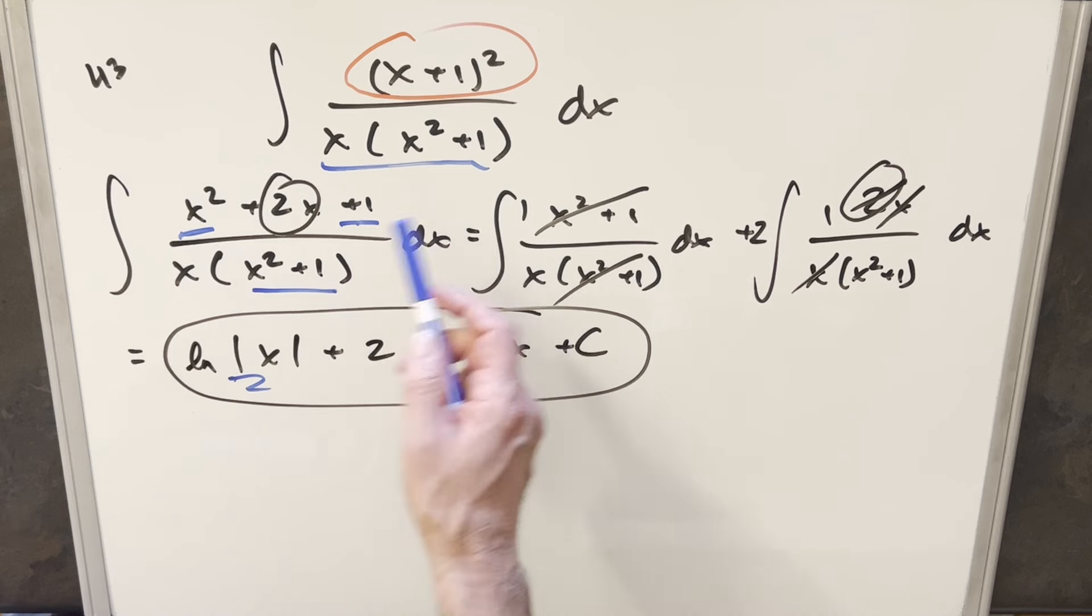So the lesson there is don't overcomplicate it, just use the cancellation you have, and then it becomes an easy integral. So there you have it, really quick integral from the Vienna Integration B 2024. Thanks everyone for watching, have a good day.